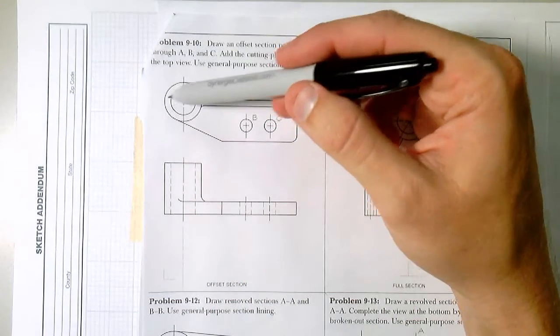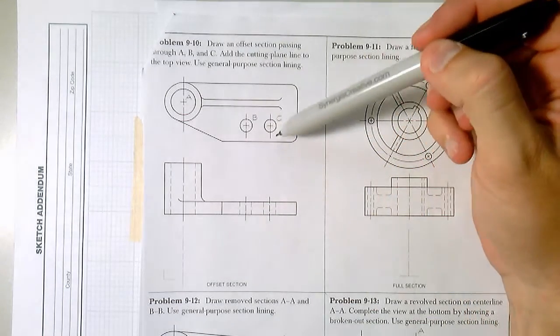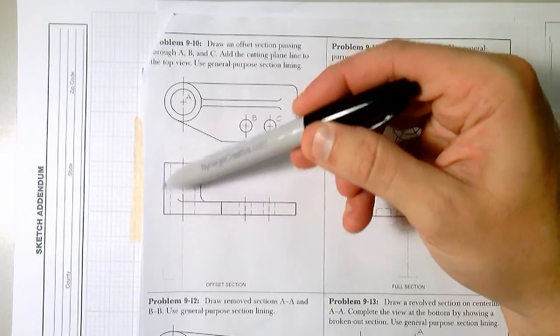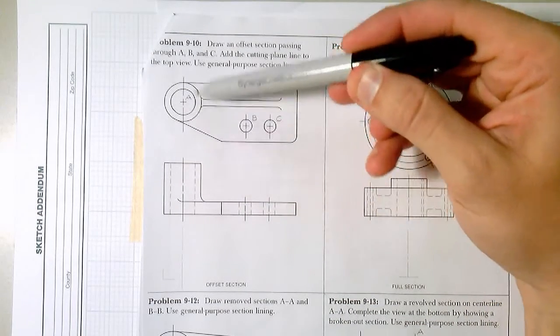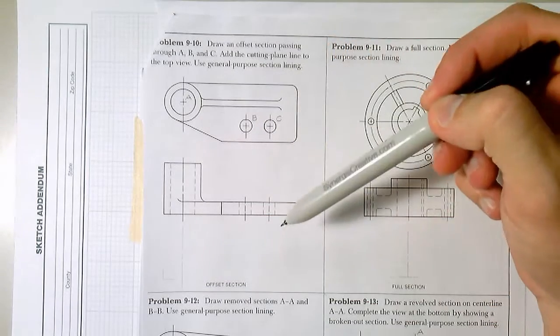The first object we're looking at here is this kind of plate with a couple holes drilled through it. And if we look down in our side view, it's got a raised kind of cylinder formed into it. So there's a few elements here that we have to consider.